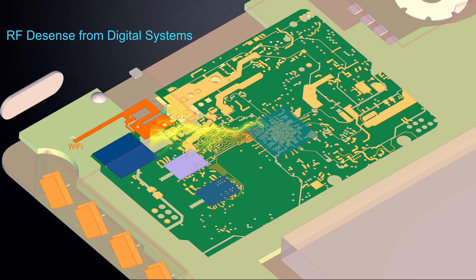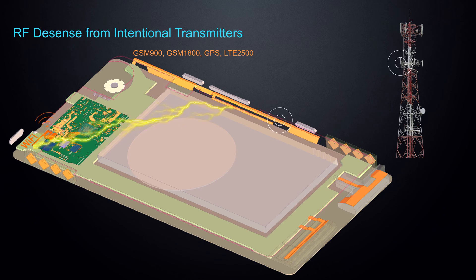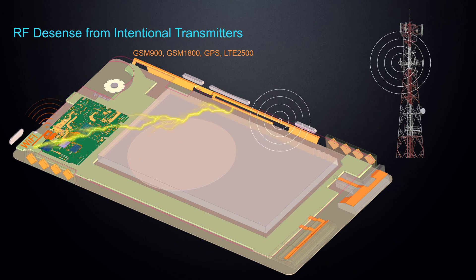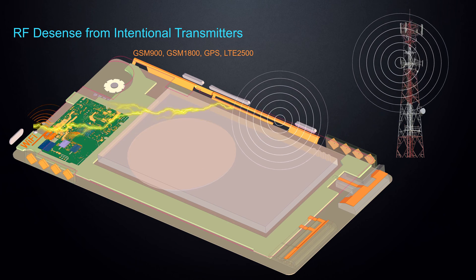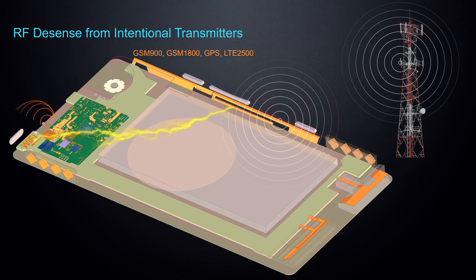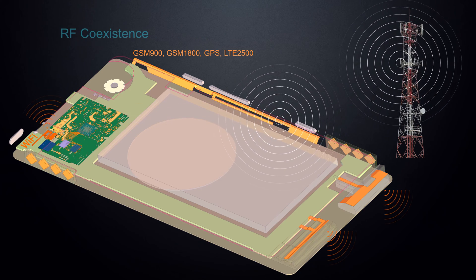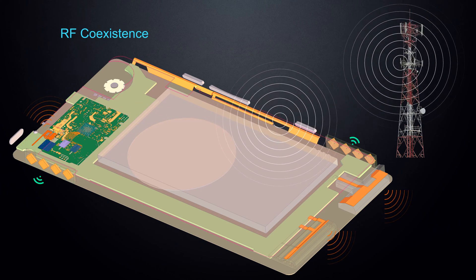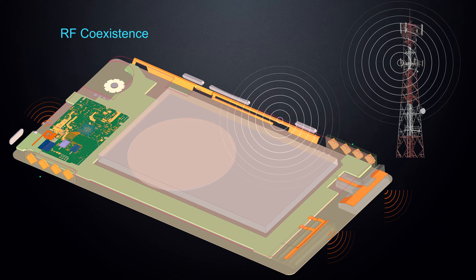RF Desense is commonly thought of as onboard interference from digital systems never intended to radiate. However, the source of Desense doesn't discriminate. It could also stem from intentional transmitters. For example, the cellular radio communicating with a remote tower may inadvertently couple to the Wi-Fi radio desensitizing that system. The goal is to achieve seamless operation between all onboard radios. This is called RF coexistence.